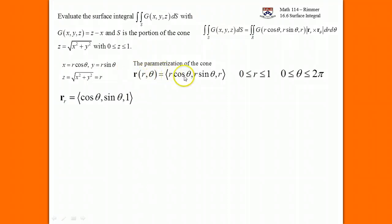Now we take the theta derivative, where cosine theta has minus sine theta as its derivative, sine theta has cosine theta as its derivative, and the third component has no theta in it, so it has zero as its partial derivative. We have to cross these two vectors.